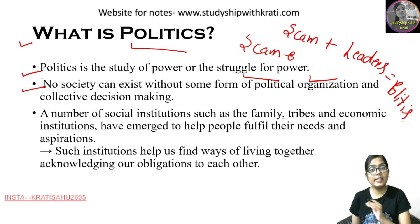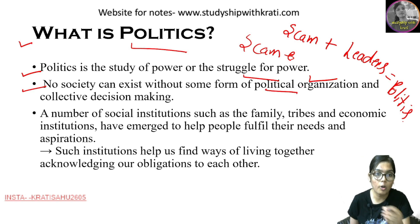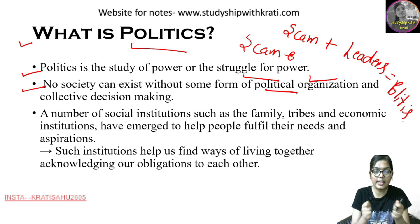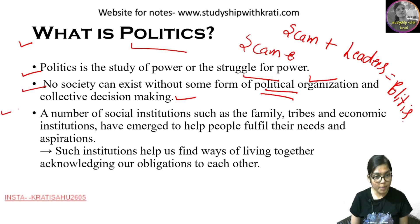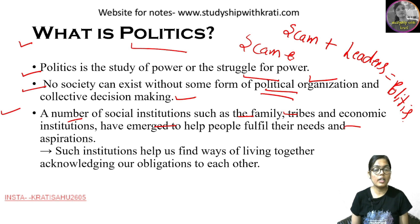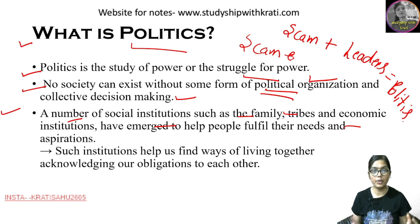Because it is all about struggle for power, and power is almost everywhere. No society can exist if there is no political organization, because political organization is necessary to take decisions and regulate society — it is a collective decision making. A number of social institutions like family, tribe, economy — all these have emerged with the help of people fulfilling their needs and aspirations.